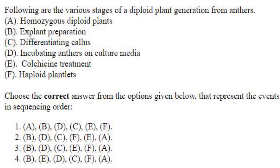The following are the various stages of diploid plant generation from anthers. The correct order begins with explant preparation — B — then incubating anthers on culture media — D. A similar question may have been asked in 2023.